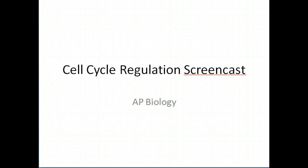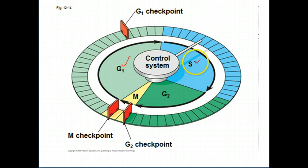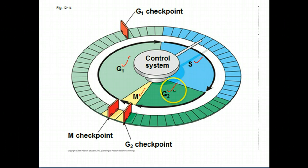Hey everyone, so I wanted to speak a little bit about cell cycle regulation. I think at this point we know the cell cycle pretty well in and of itself, but I wanted to speak about how it's actually regulated. So here we have G1, S, G2, all of which belong to interphase of the cell cycle. Then you have the mitotic phase shown over here. Mitosis is the part where you actually divide the genetic material, but there are important points of regulation in interphase.